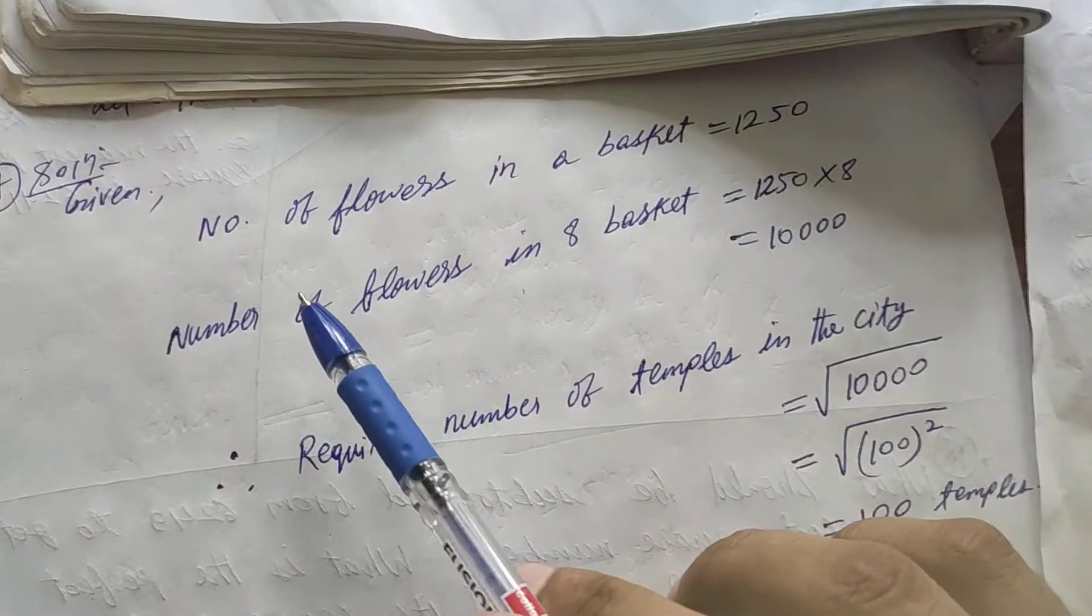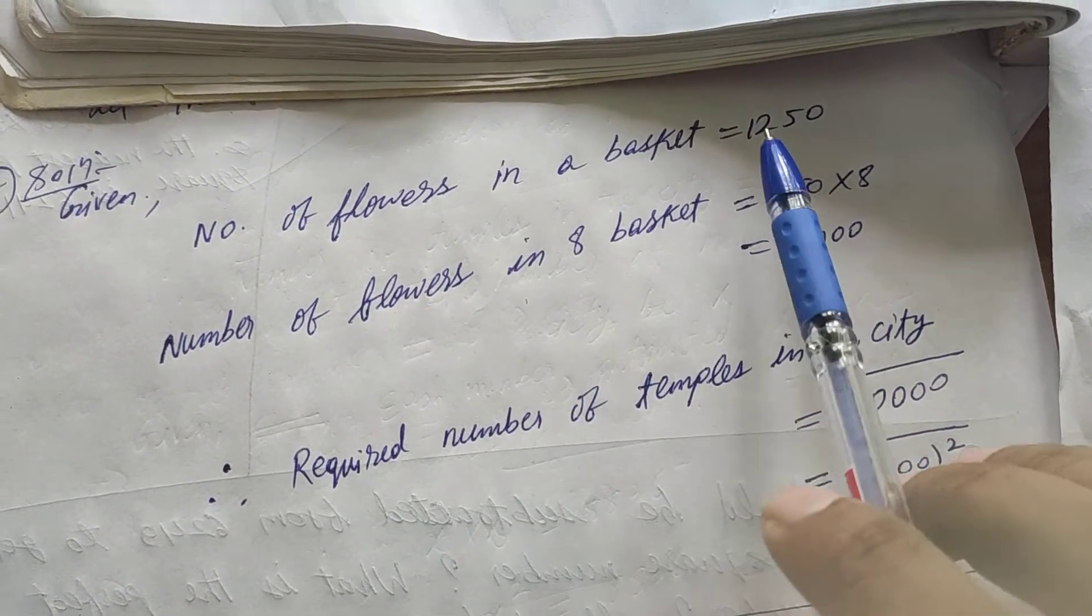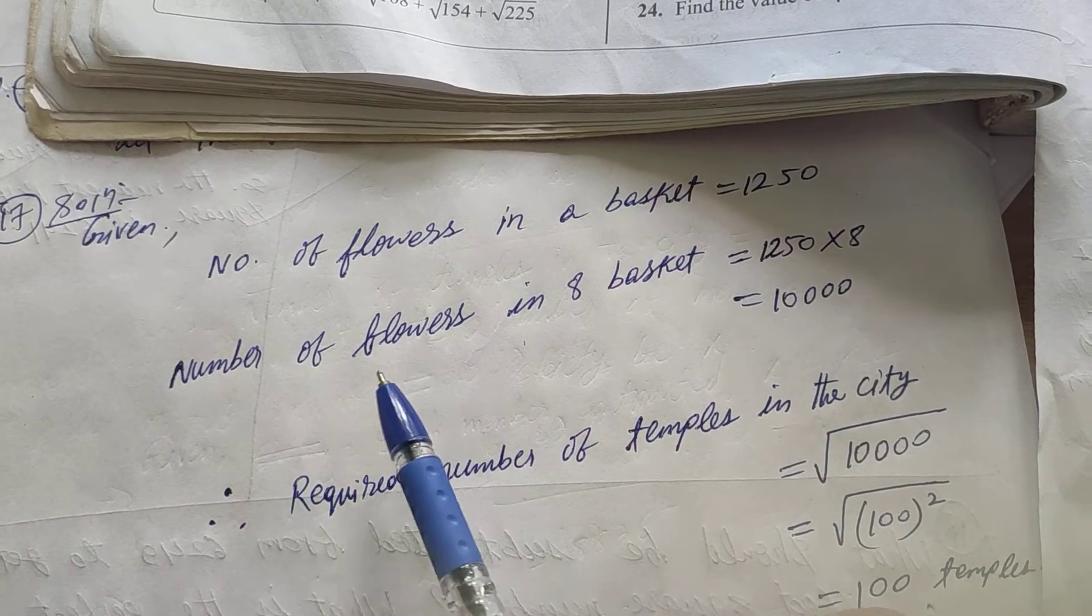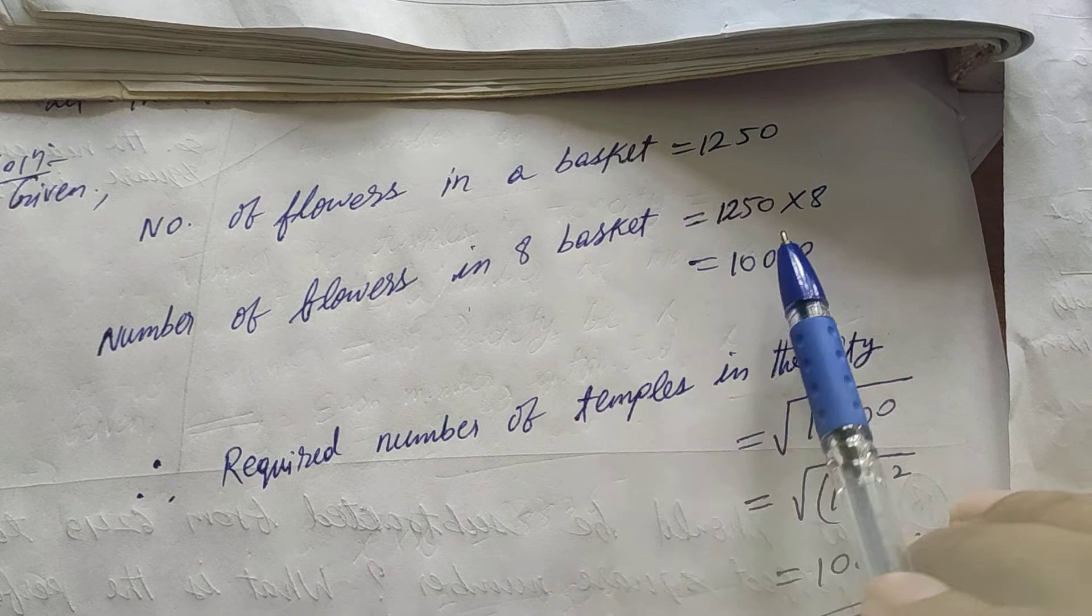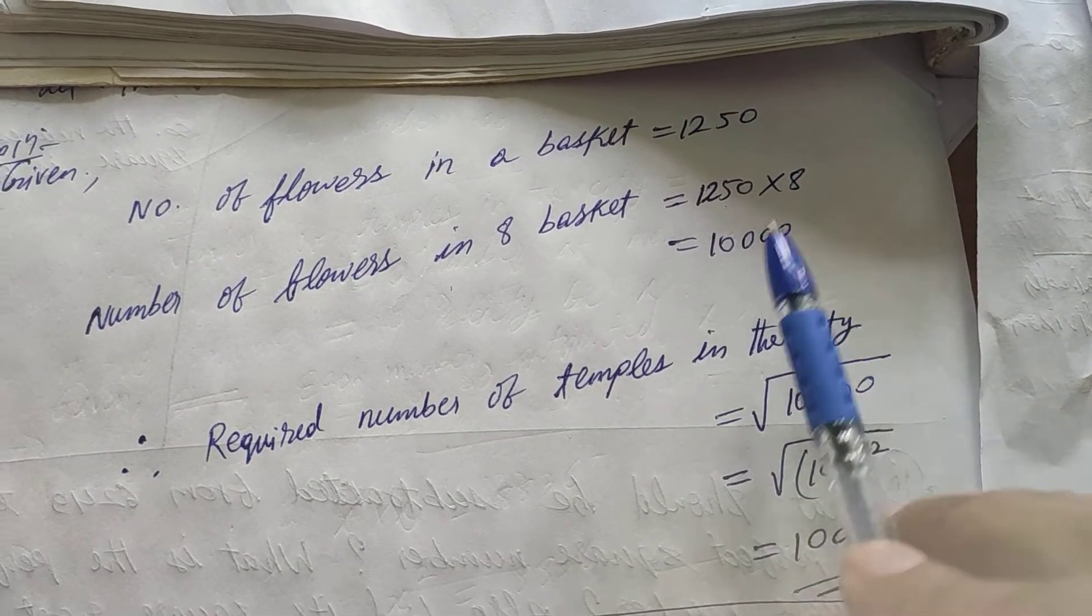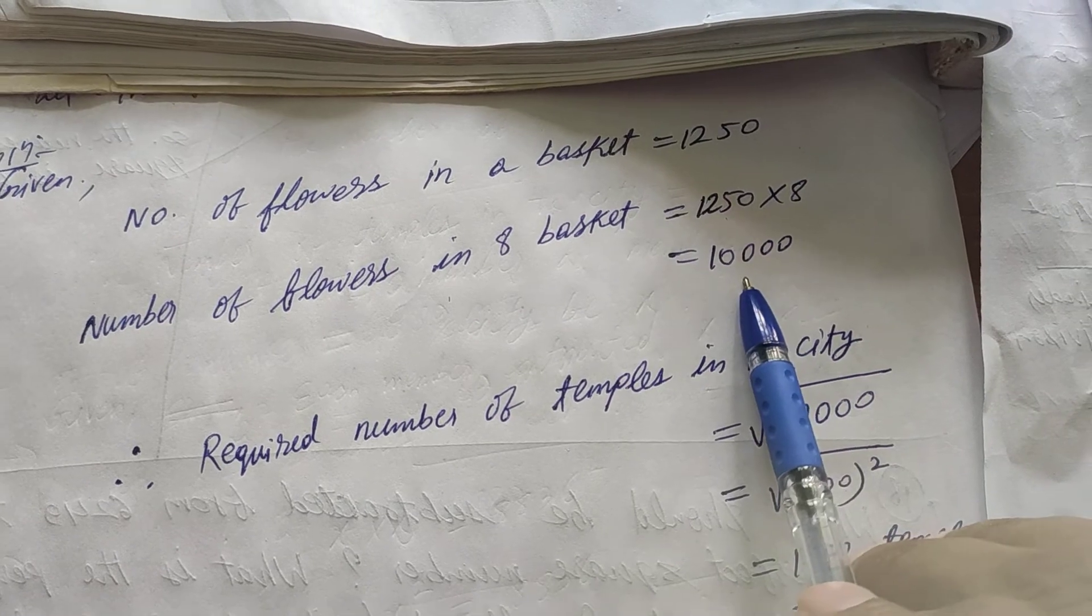As we know that in the question it is given that in one bucket it contains 1250 flowers. So, how many flowers will be there in 8 buckets? In 8 buckets it will be 1250 flowers into 8 buckets. That is 10,000.